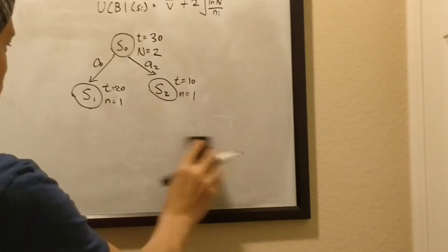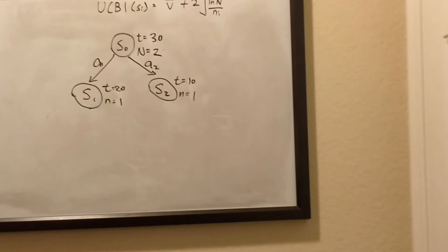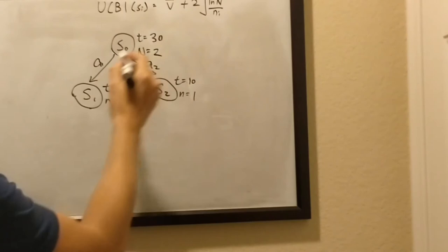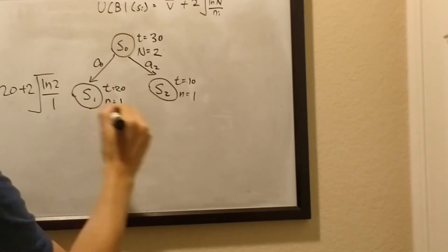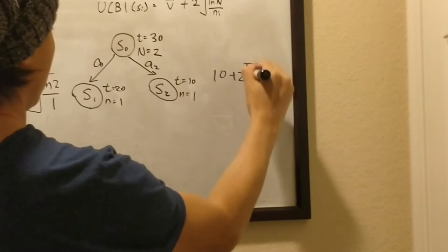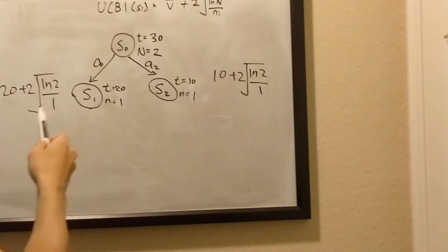So now, we want to see which node has more value. So, again, we use the formula here, which is, for this one, it would be 20 plus 2 times the square root of natural log of 2 divided by 1. And then this one is 10 plus 2 and then natural log of 2 divided by 1. So, these two values are exactly the same, so we know off the bat that this one has a higher return value, so we're going to choose state 1 at this point.